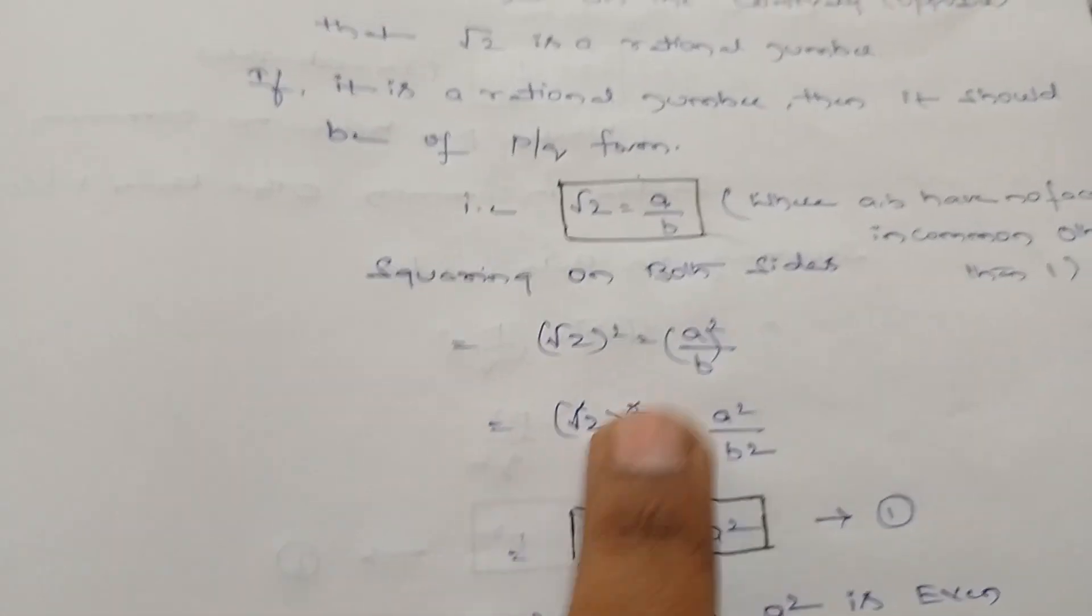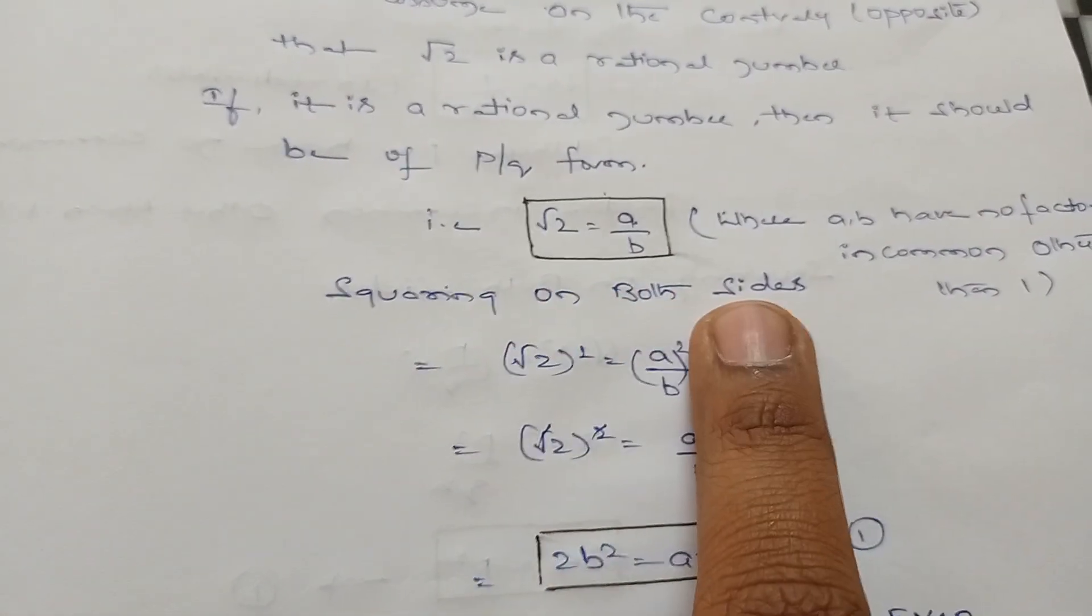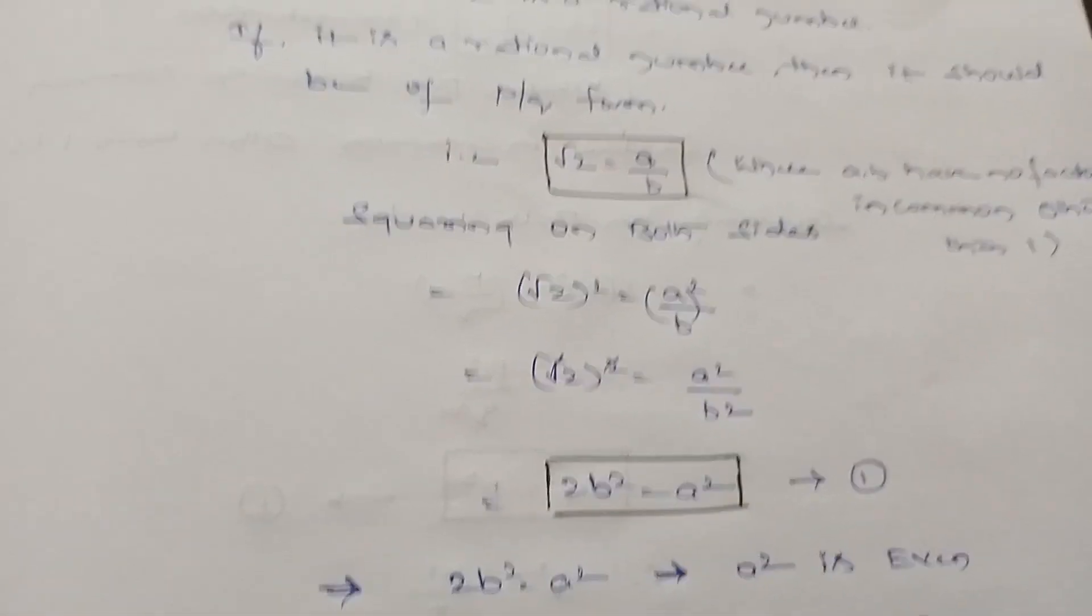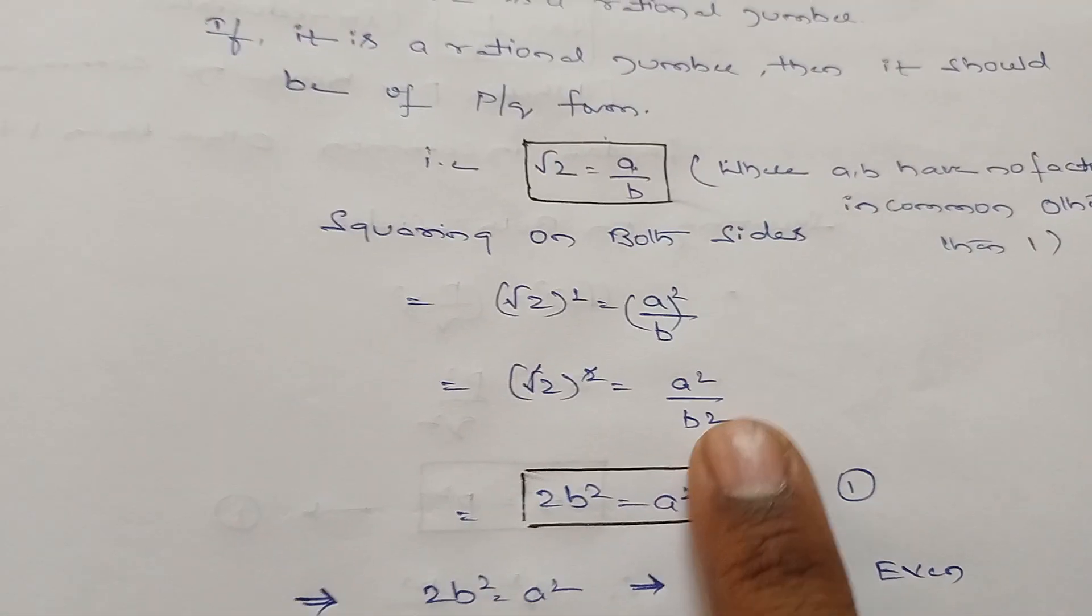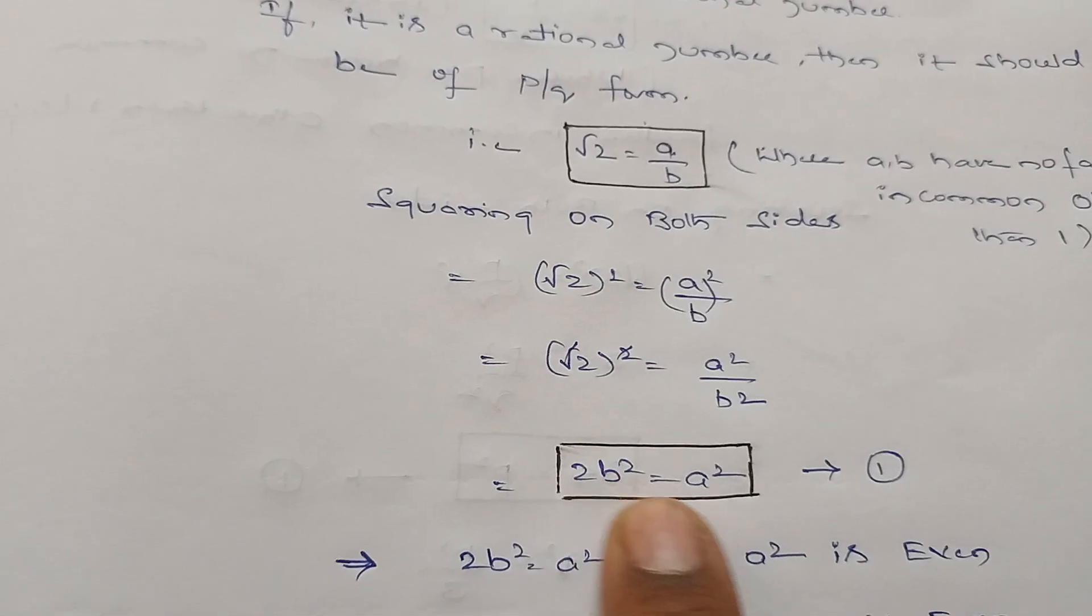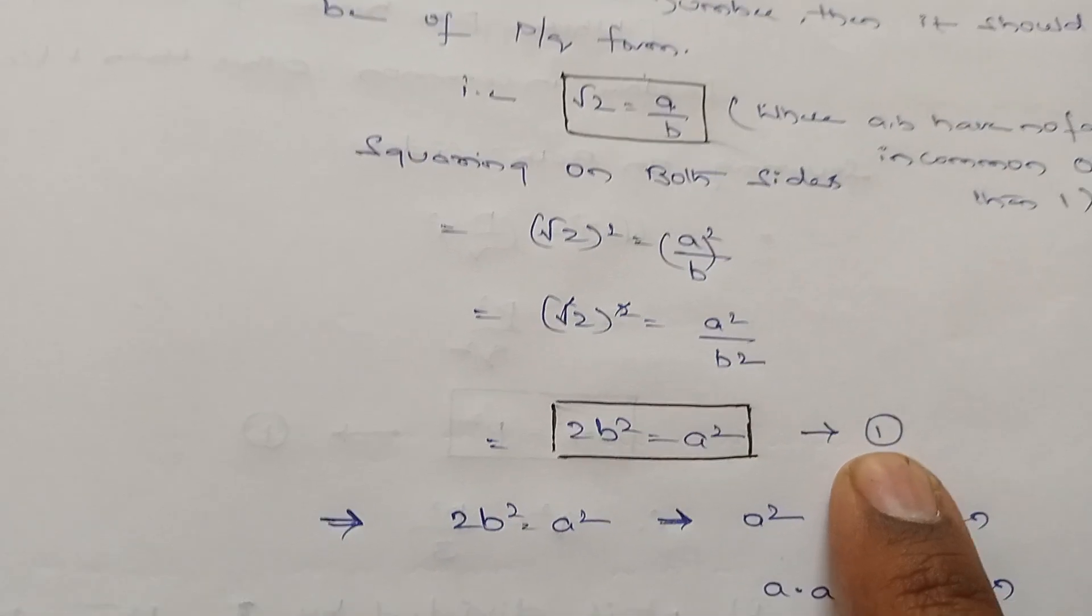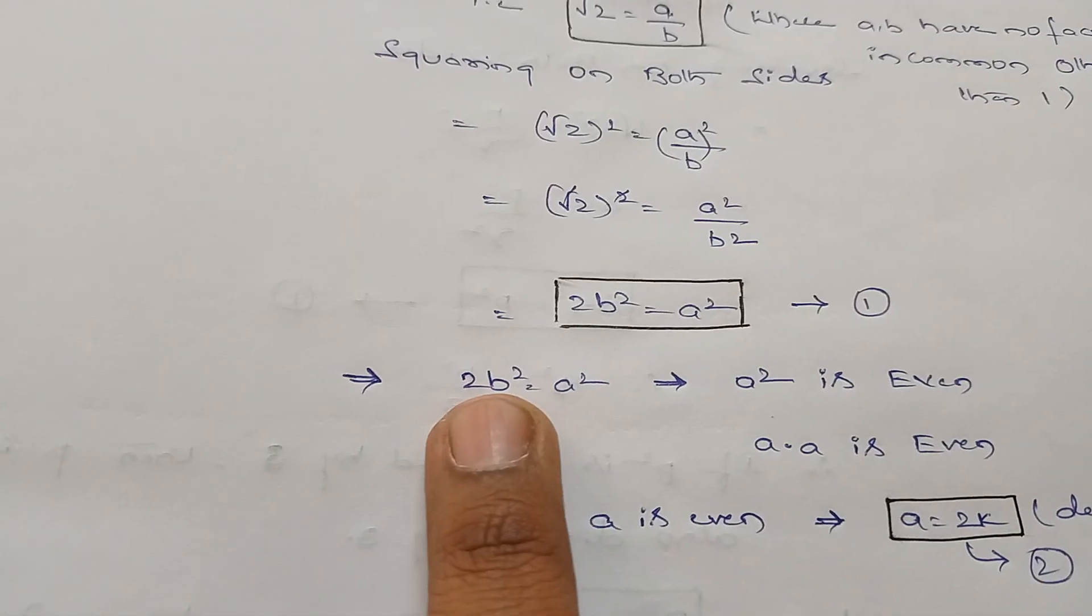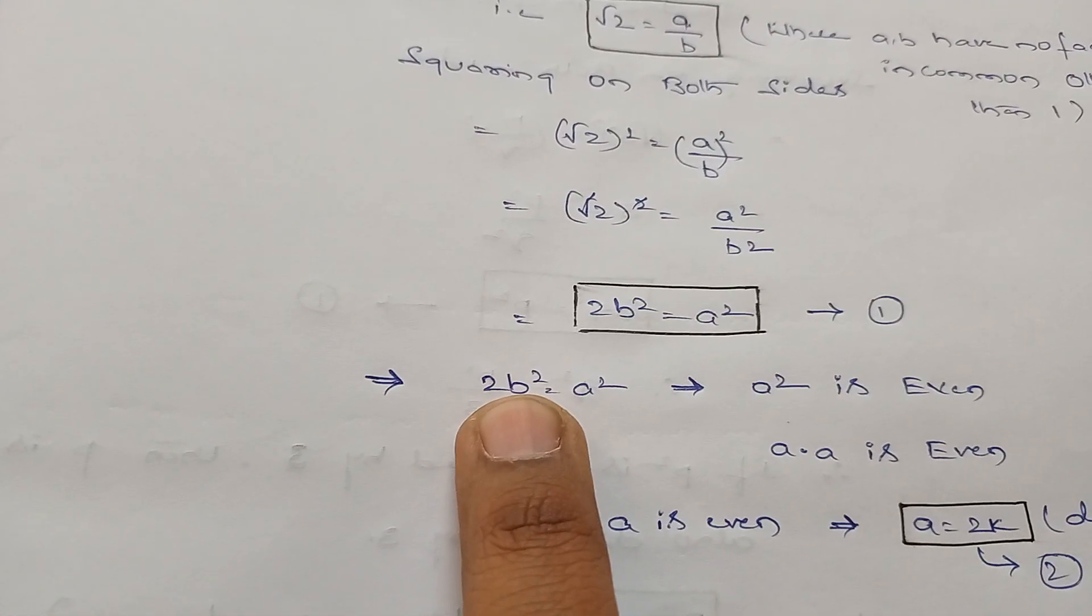Now, squaring on both sides, we get (√2)² = (a/b)². Therefore, 2 = a²/b², so we get 2b² = a², which equals equation 1.